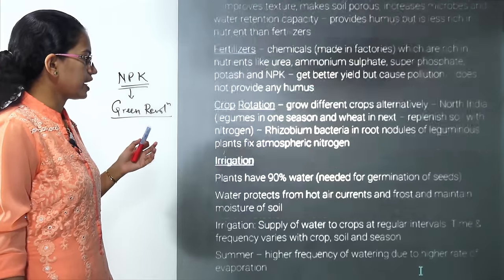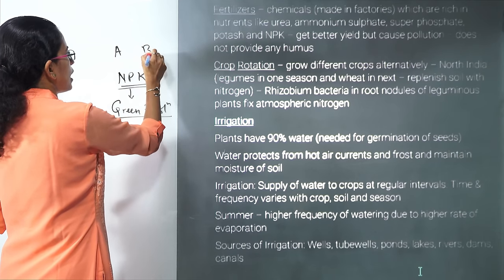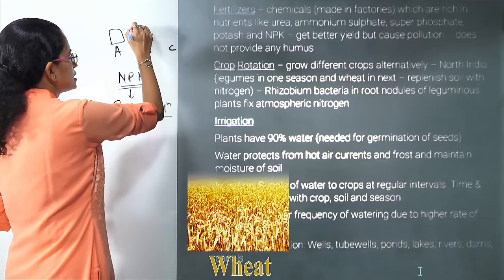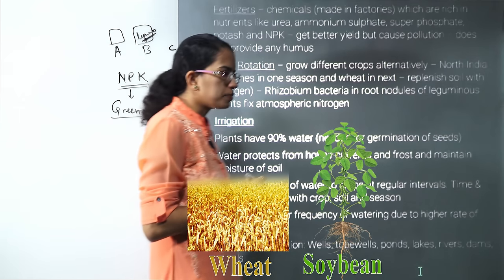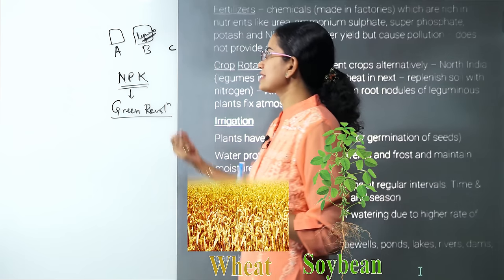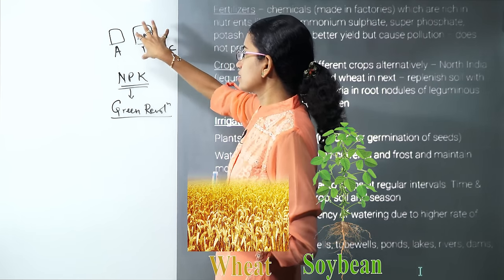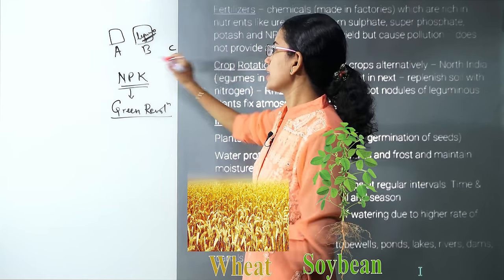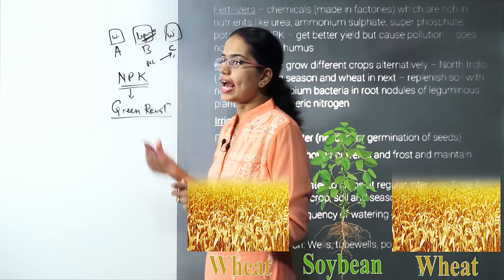Crop rotation means rotating different crops across seasons. For example, in season A you grow wheat; in season B you grow leguminous crops. Leguminous crops have rhizobium bacteria in their root nodules, which fix nitrogen into the soil. This nitrogen-enriched soil then benefits the next wheat crop. That is how crop rotation works.